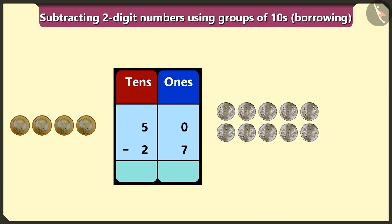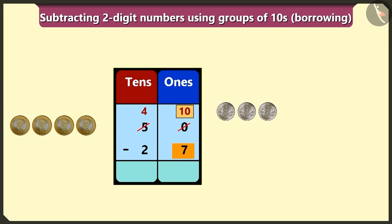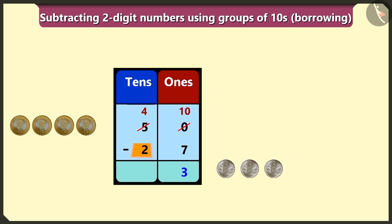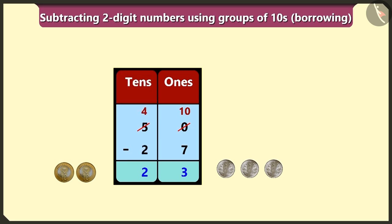So we will borrow one ten from its neighbor number five in the place of tens. Now we will write ten ones in the place of zero in the box of ones, and we will write four tens instead of five tens in the box of tens. If we subtract seven ones from ten ones in the place of ones, we will have one, two and three left. Now if we subtract two tens from four tens in the box of tens, we will get two tens. After subtracting twenty-seven rupees from fifty rupees, the milk seller uncle will return us two tens and three ones — means twenty-three rupees.